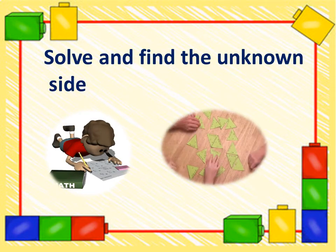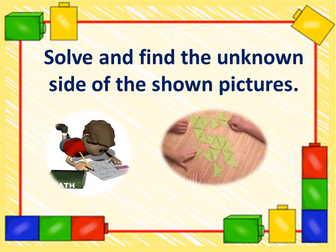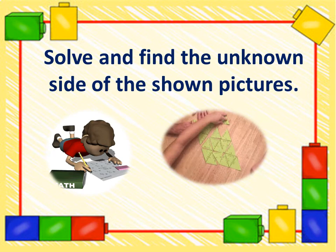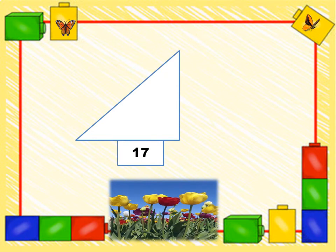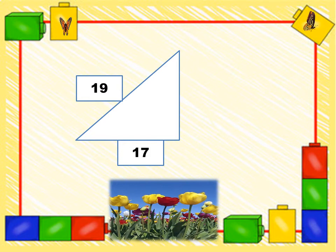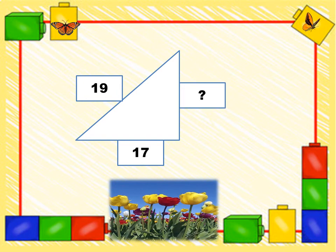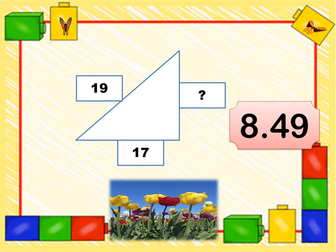Solve and find the unknown side of the shown pictures. Try to guess the following pictures presented. In this triangle, 17 is given as one of the leg, 19 as the hypotenuse since it is the opposite of the 90-degree angle. And what is unknown? Either A or B. So you can use the formula A or B formula. What is your answer? What's your guess? Here is it, 8.49.